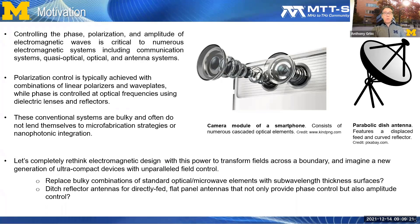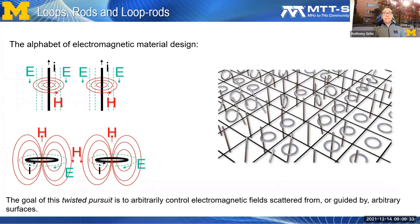And do away with reflector antennas and replace them with directly fed flat panel antennas that not only control phase, but also amplitude. Through sub-wavelength structuring, we will construct surfaces from small metallic or dielectric scatterers — small electric and magnetic dipoles, meta-atoms, rods and loops, and loop rods — and other small inclusions. Collections of scatterers such as these can enable a wide range of control over surface properties.